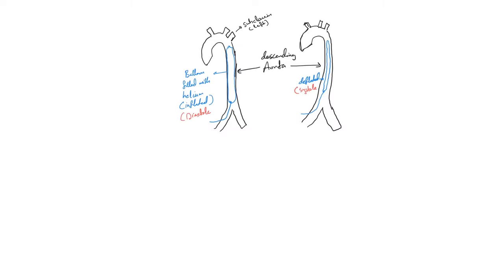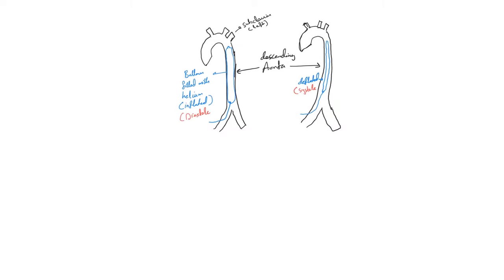As you see here we have the descending aorta and we have a balloon here, the blue one sitting in the descending proximal descending aorta just distal to the left subclavian artery. You see it's inflated during diastole and deflated during systole.